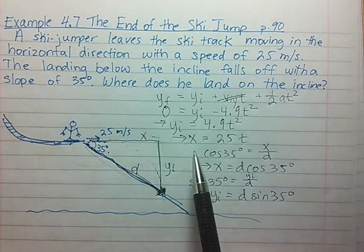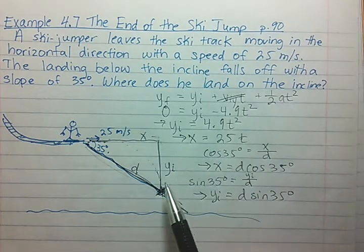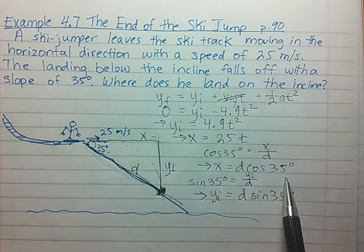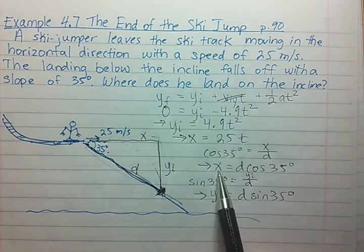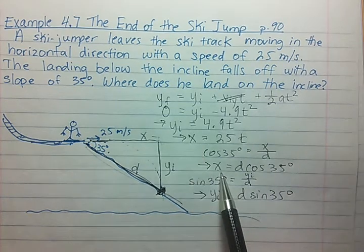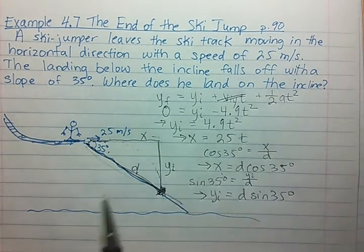Now we have x equals 25 t and x equals d cosine 35. These x's are equal to each other. So we can just set those two equations equal to each other.